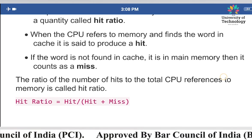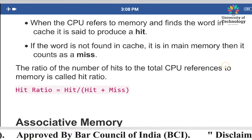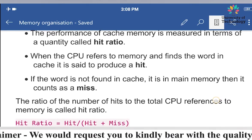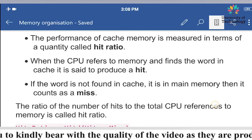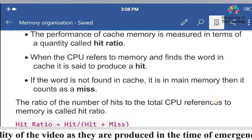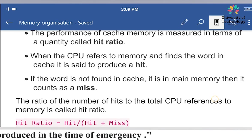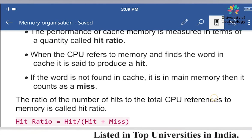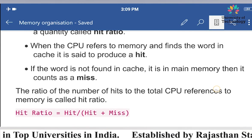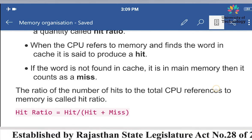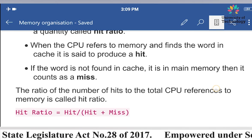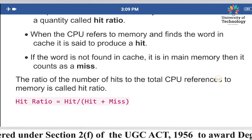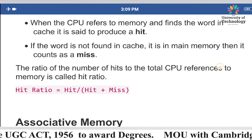If the word is not found in the cache and it is in the main memory, then we count it as a miss. So, the CPU first searches the cache memory. If it finds the required data in the cache memory, we say it has produced a hit. If the data is not inside the cache memory and is inside the main memory, then we count it as a miss.